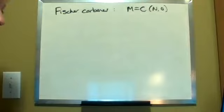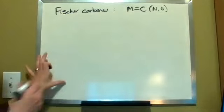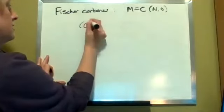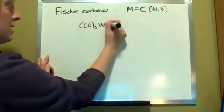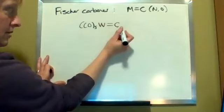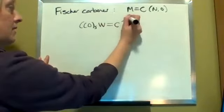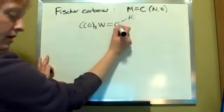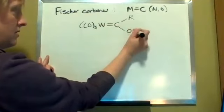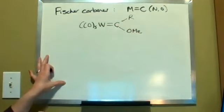The first one was isolated in 1964 by Fischer and Maasböl, and it looks like a tungsten carbonyl complex right here. So there's your metal-carbon double bond, now it is bound to some alkyl right here but then also a methoxy, so there's your heteroatom right there.